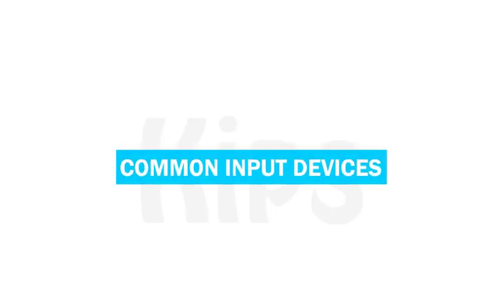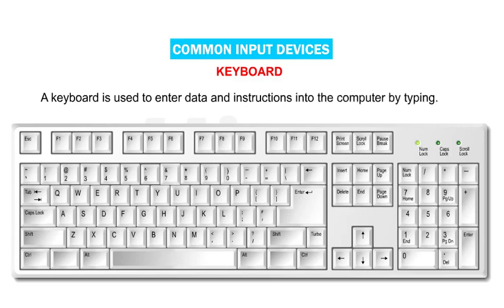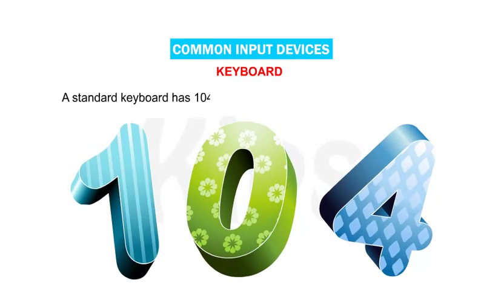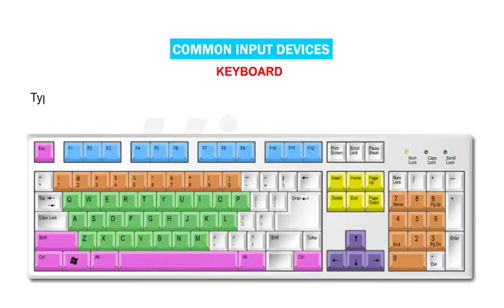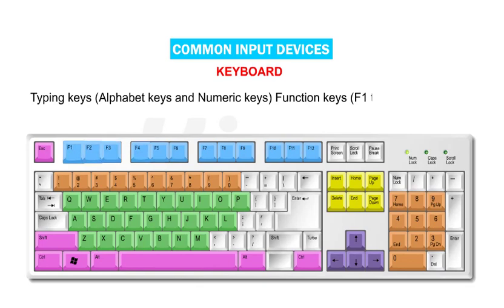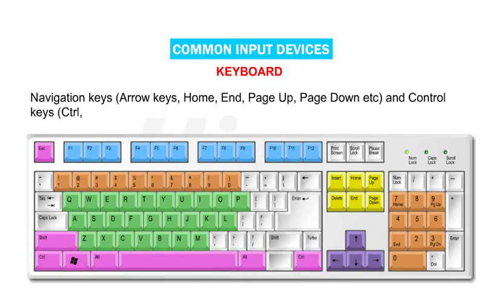Let us now talk on a few common input devices. A keyboard is used to enter data and instructions into the computer by typing. A standard keyboard has 104 keys which can be divided into four groups: typing keys — alphabet keys and numeric keys; function keys F1 to F12; navigation keys — arrow keys, Home, End, Page Up, Page Down, etc.; and control keys — Control, Alt, Windows logo key and Escape.